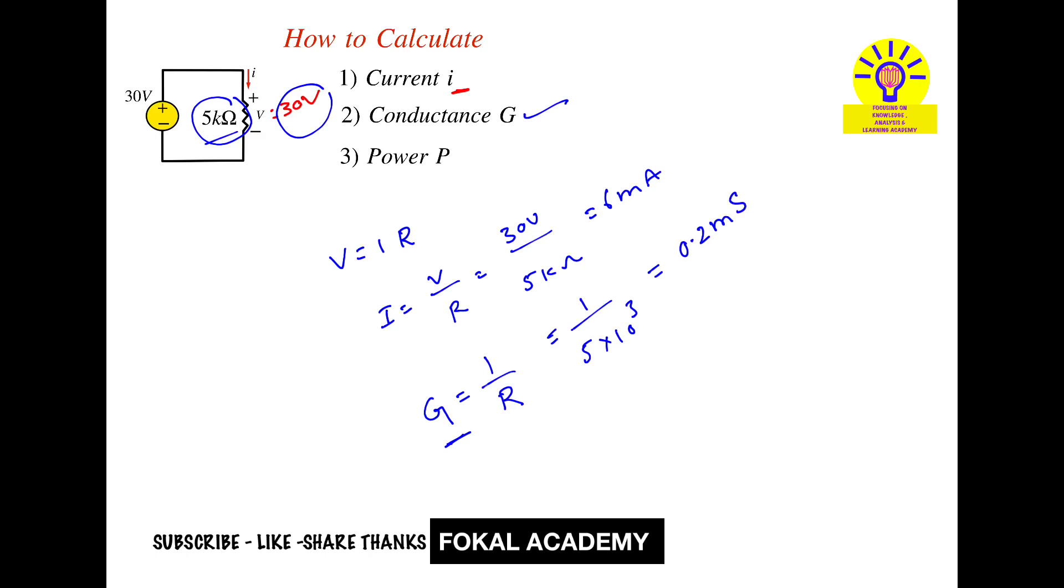Now for power P. Power is equal to the product of voltage into current. So voltage is 30 volts and current we got is 6 milliamperes.